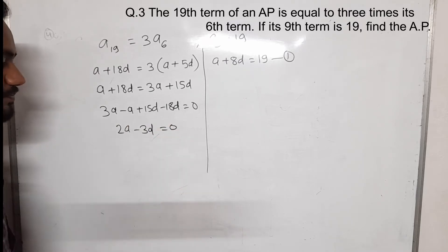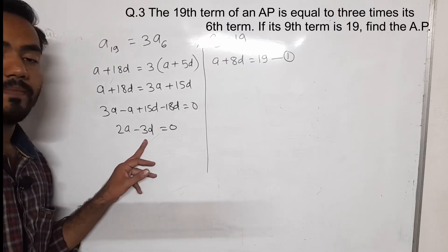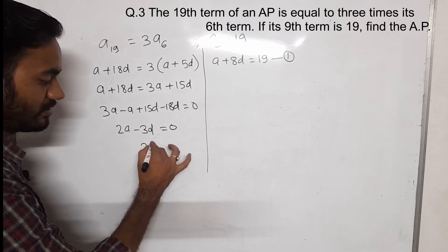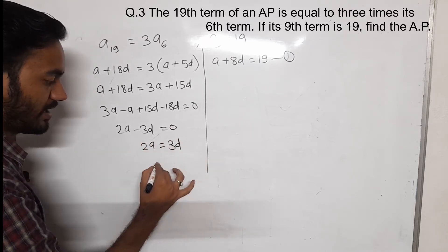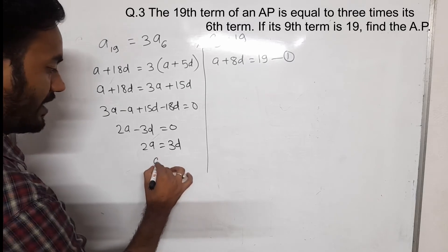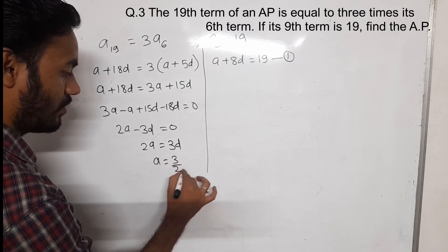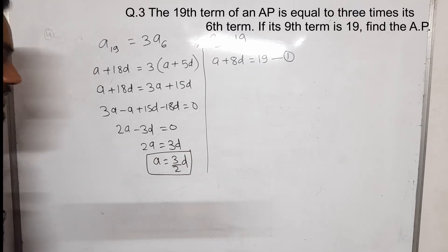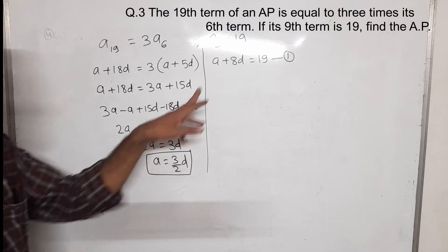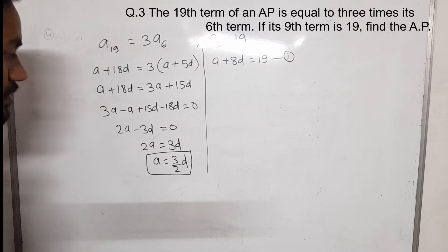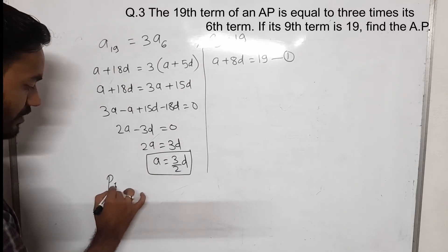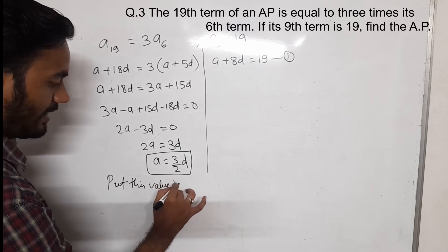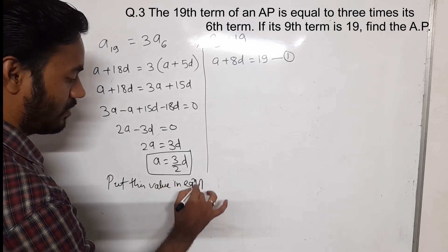That is equal to 0. Taking minus 3D to the other side it becomes plus, so 2A equals 3D, and A will be 3 by 2 times D. Now we put this value of A into equation number 1.